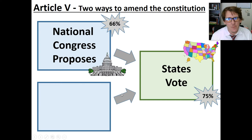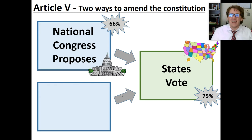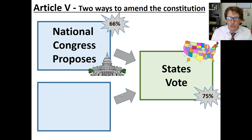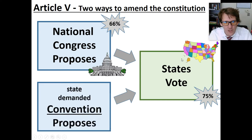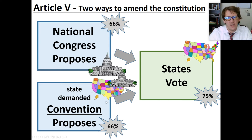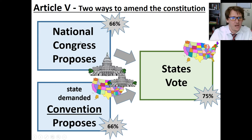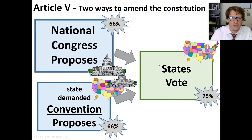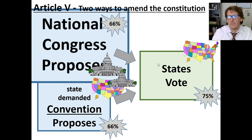There have only been 27 amendments added to the U.S. Constitution. Over 11,000 amendments have been proposed over the 200-year history of America, and only 27 times have they been able to advance past step one and get to step two. The other way is a state-demanded convention proposes a change, but this one never really happens — it's very rare. All 27 amendments have come through the Congressional route.